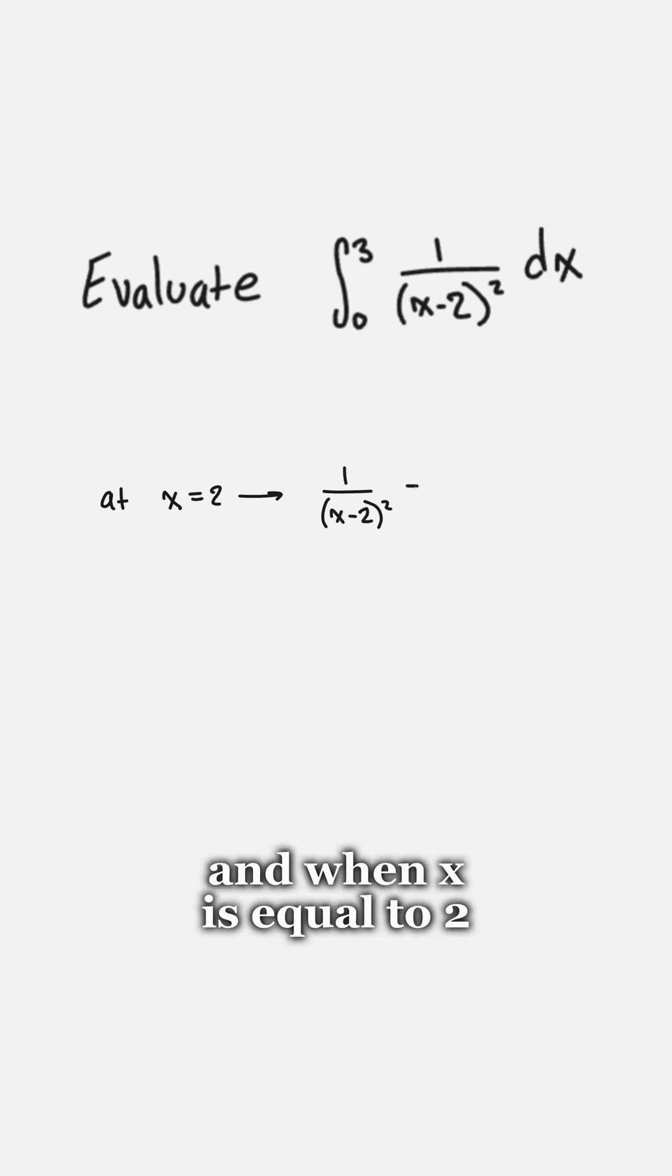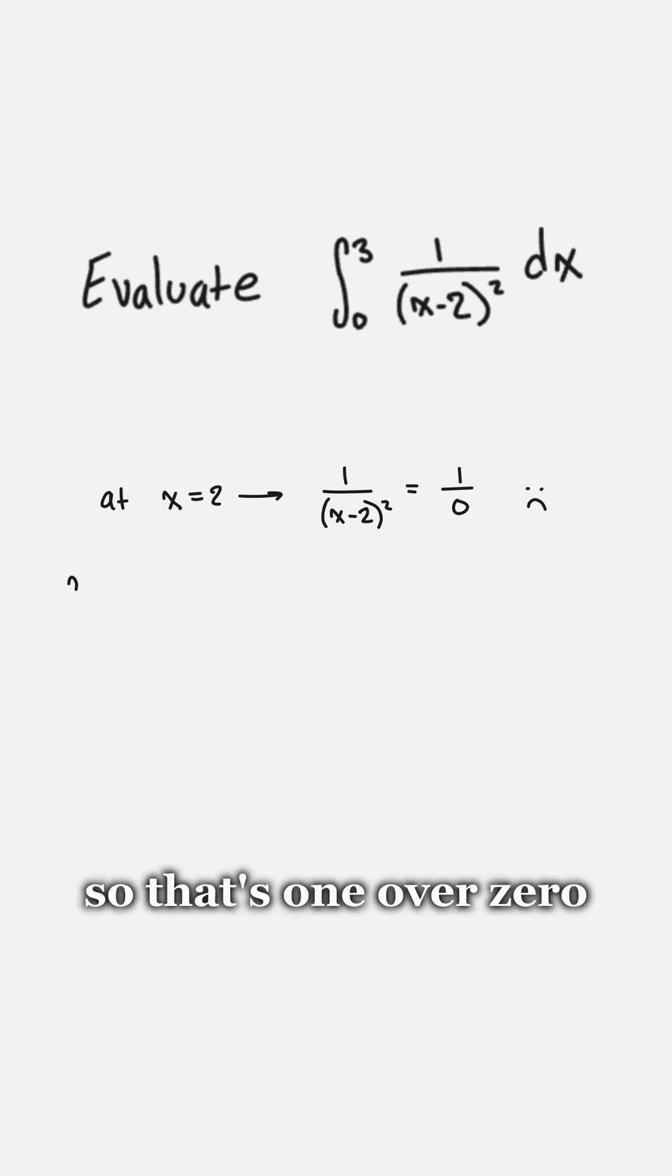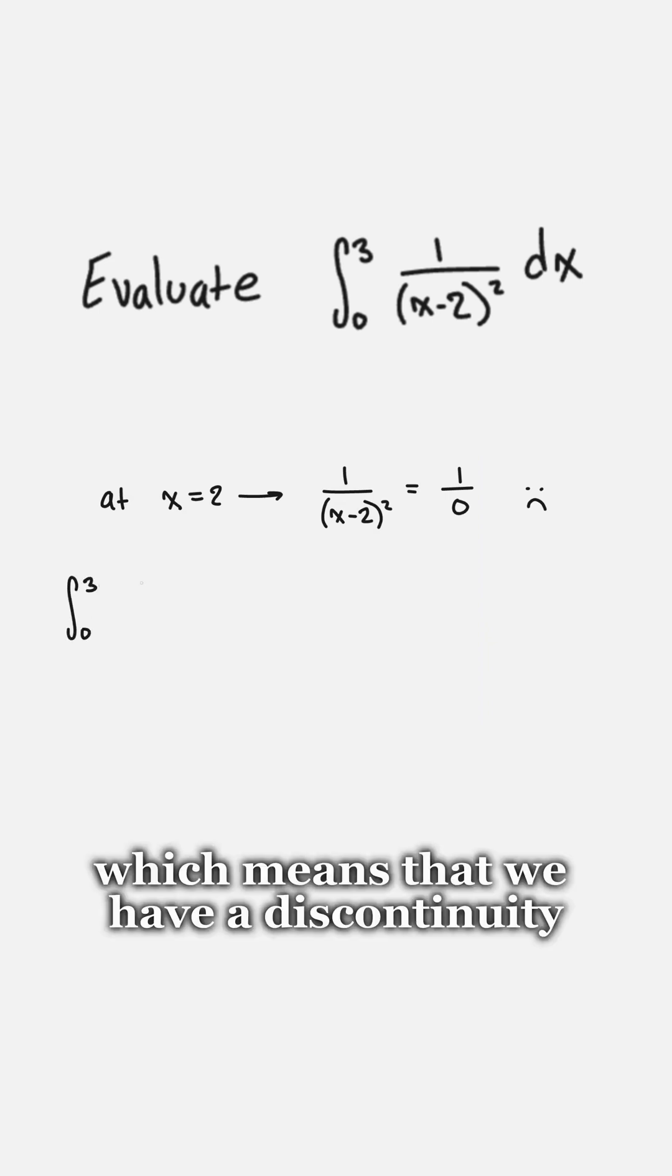and when x is equal to 2 we get 1 over 2 minus 2 squared, so that's 1 over 0, which means that we have a discontinuity.